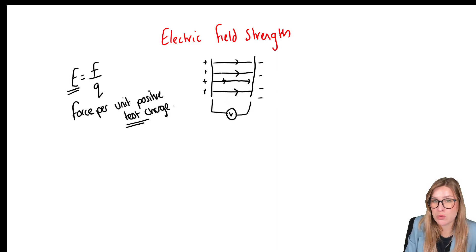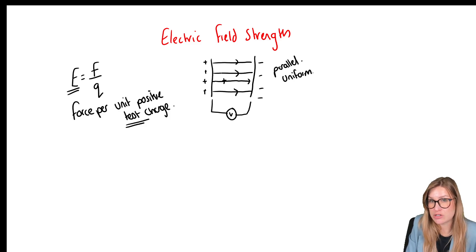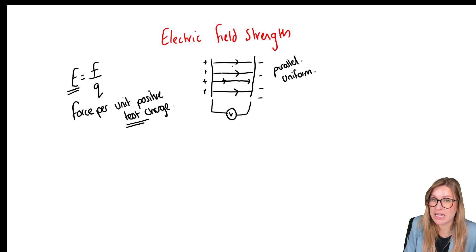One more thing to notice about the electric field lines between these two plates: because they are parallel plates, we say they have a uniform electric field. We can see that because the electric field lines are parallel to each other and have the same distance between them.